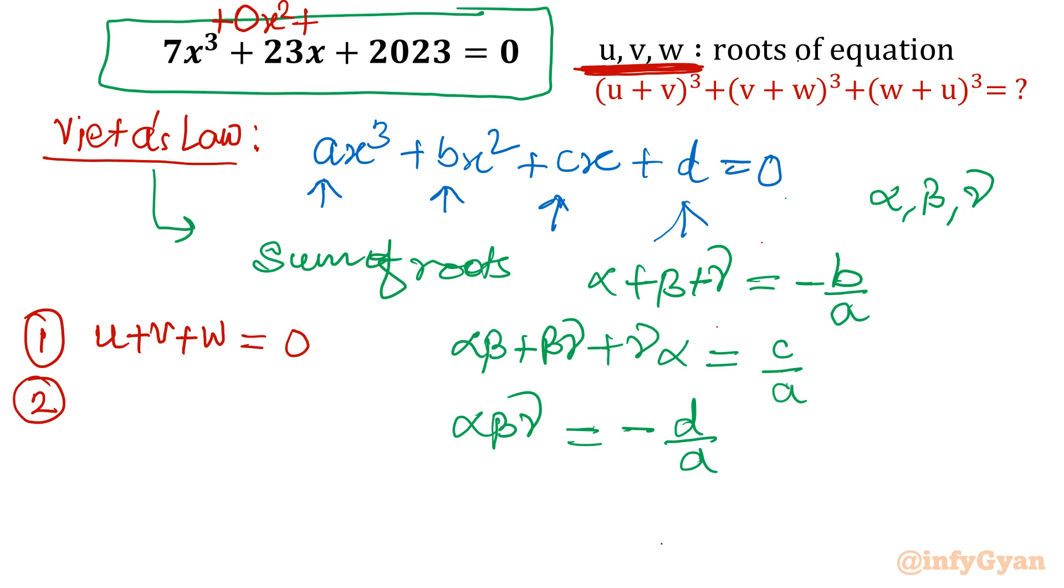Product of roots, so product of roots -d/a. This is done, sum of roots. Now product of roots I will write uvw, that is equal to -d/a. So -2023/7. So if I will write this value, this value is -289. You can check -289.